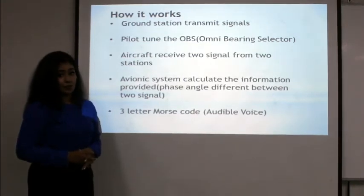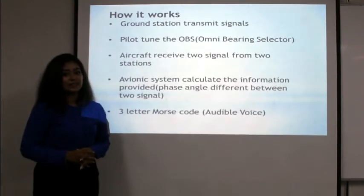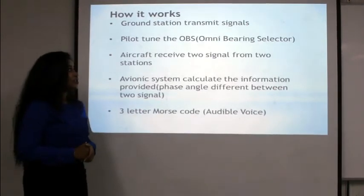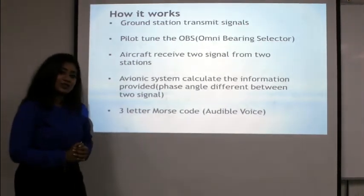Now I am going to explain how VOR works. First, the ground station transmits the signal. Then the pilot tunes the OBS, which is the Omni Bearing Selector. The aircraft receives two signals: one from the stationary antenna and another from the rotating antenna.